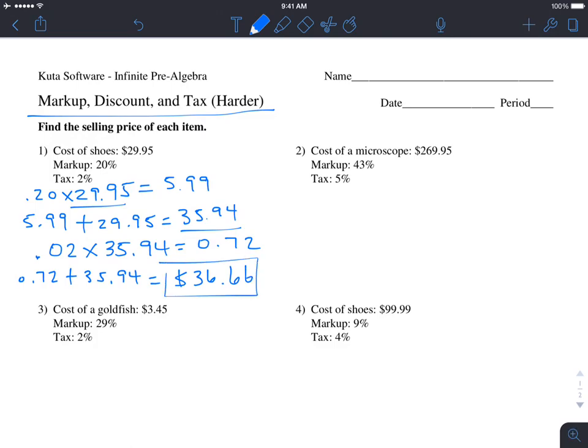Number two: the cost of a microscope is $269.95, the markup is 43%, and the tax is 5%. We do 43% of $269.95. In the calculator, 0.43 times 269.95 equals $116.08. We add that to the original price: $116.08 plus $269.95 equals $386.03.